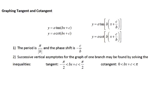The next thing we're looking at is graphing tangent and cotangent. Tangent and cotangent have a different period because they repeat more often than sine and cosine. For sine, secant, and cosecant the period is 2π divided by b, but for tangent and cotangent the period is π divided by b. Phase shift is still exactly the same.